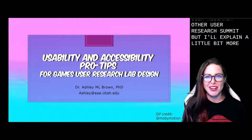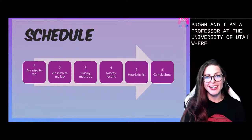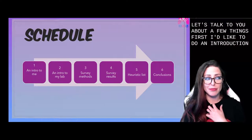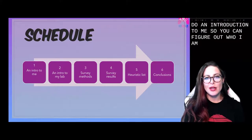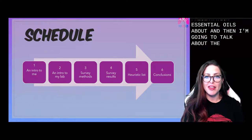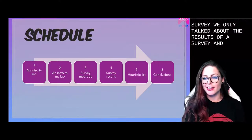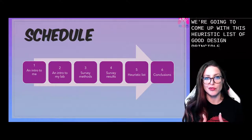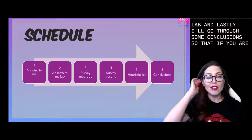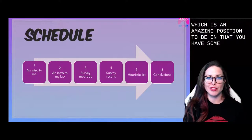I'll explain a little bit more and provide context for that later. I am Dr. Ashley Brown, and I am a professor at the University of Utah where, surprisingly, I run a user research lab. Today I'd like to talk to you about a few things: an introduction to me, an introduction to my lab, the methods I used to design my lab via a survey, the results of that survey, a heuristic list of good design principles for accessibility and usability in a lab, and lastly some conclusions with pro tips to guide you along the way.